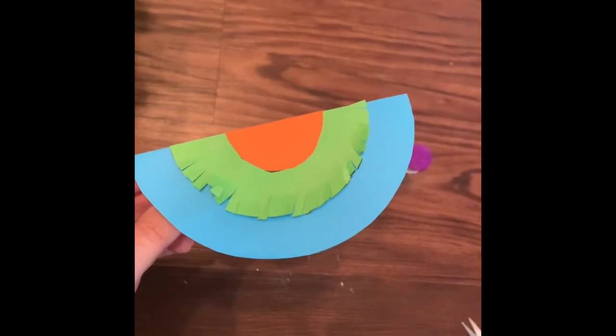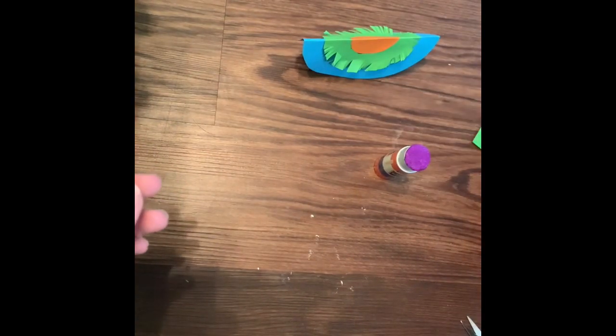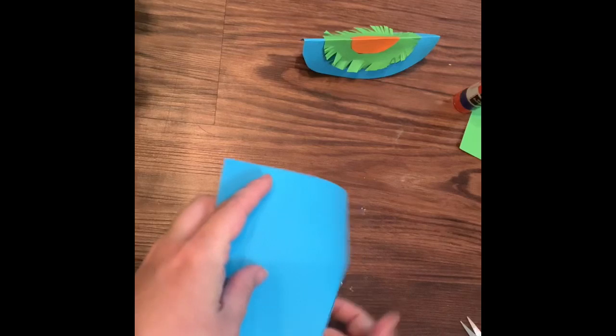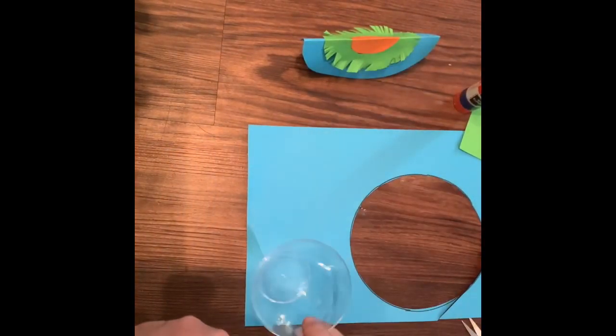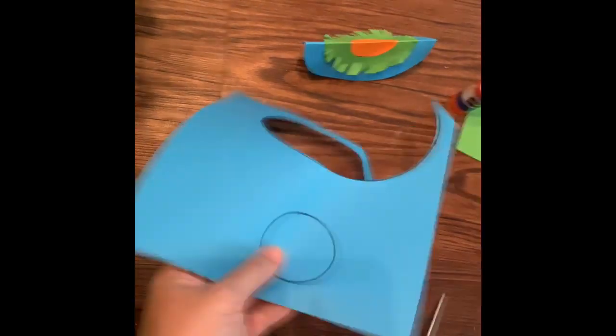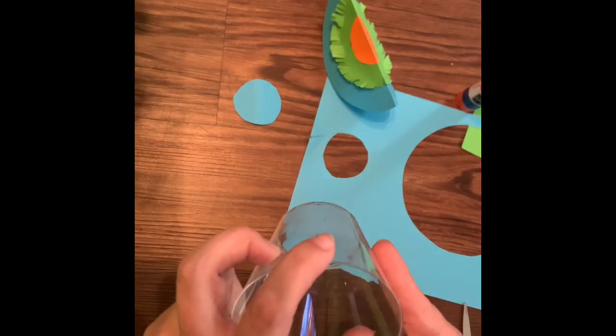So what you're going to do is take the same color as the body, which is this blue, and then you're going to use that smaller template like we did for the orange part of the wing and we're going to trace that. Okay, I've got my first circle cut out. I'm going to go ahead and repeat that step again.